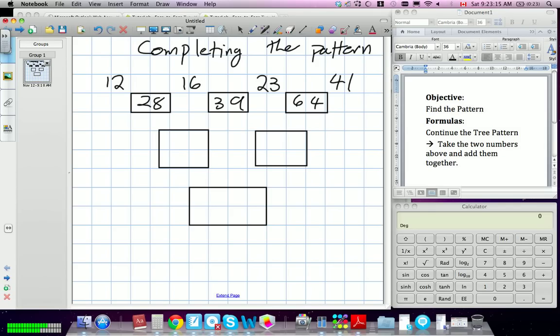We have one row, this is our first row, 12, 16, 23, 41, and there's a second row, 28, 39, 64.